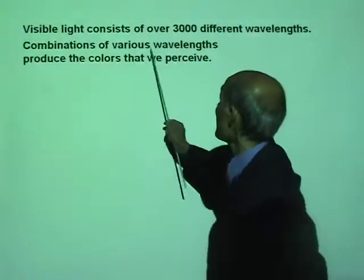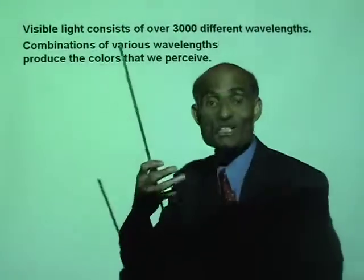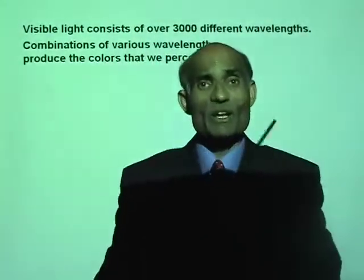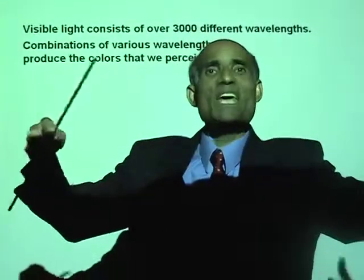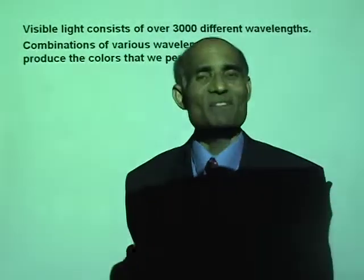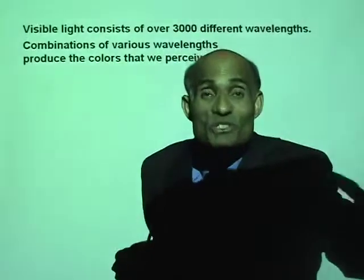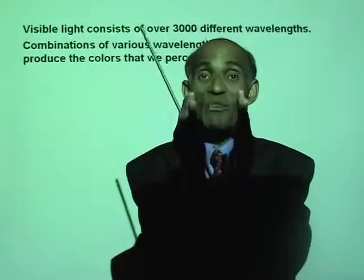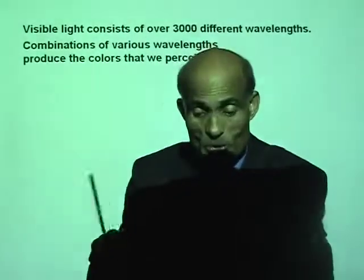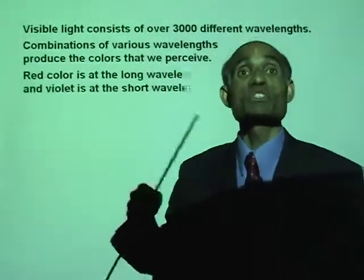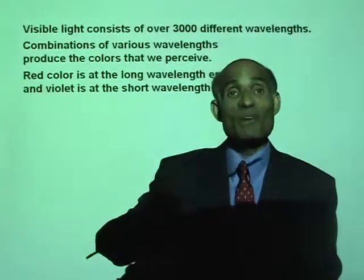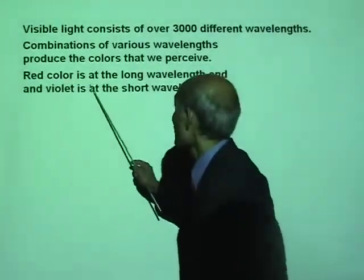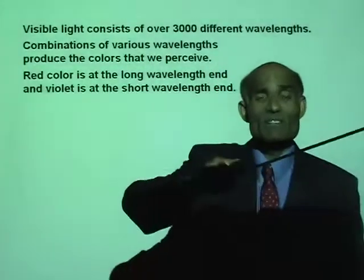Combinations of various wavelengths produce the colors that we perceive. How many different shades of red colors do we have? We have hundreds of different shades. The colors that we actually see are combinations of different shades, and each color is a distinct wavelength. Red color is at the long wavelength end.